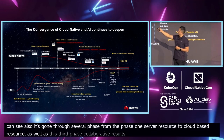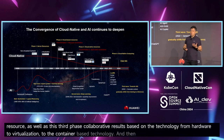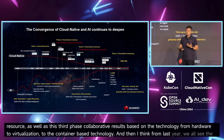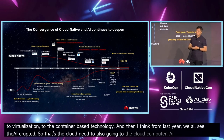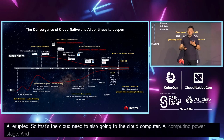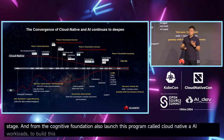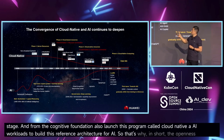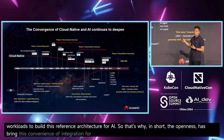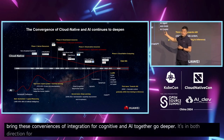Based on technology from hardware to virtualization to container-based technology, from last year we all saw the AI eruption, and cloud-native is also moving to the cloud computing power stage. The Cloud Native Foundation also launched the cloud-native AI workgroup to build a reference architecture for cloud-native AI. This brings a convergence and integration of cloud-native and AI together, going deeper in both directions: cloud-native for AI, and AI for cloud-native.